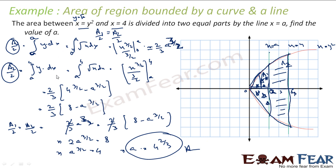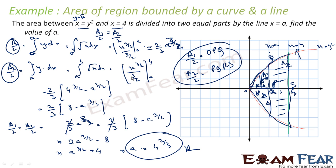So the calculation was straightforward once we understood the setup: identify the curve and the line x = 4 forming a region, recognize that x = a divides it into two equal halves A1 = A2, use symmetry to work with A1/2 and A2/2, integrate each half, and equate them to find the value of a.